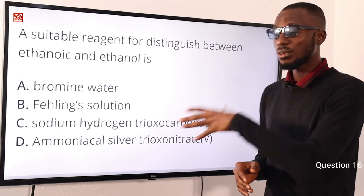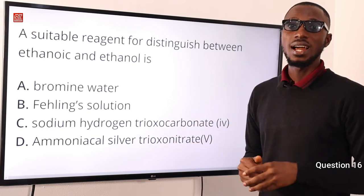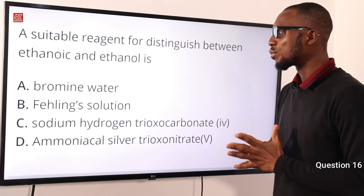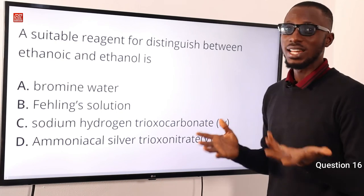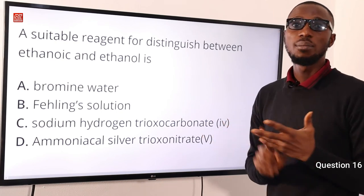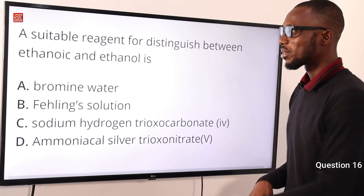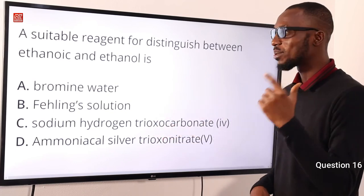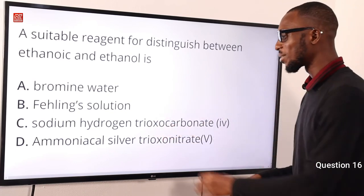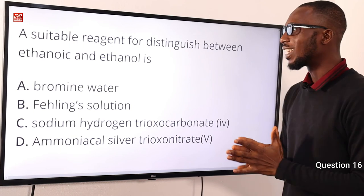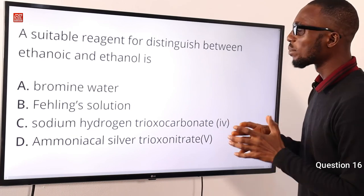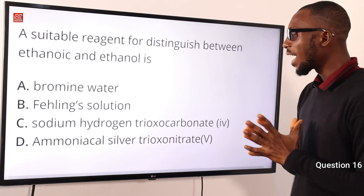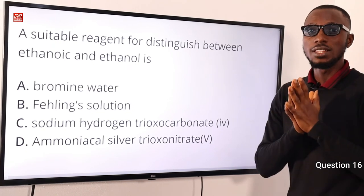When you react sodium hydrogen carbonate with an acid, you get water, carbon dioxide, and salt. This gives a good hint — since ethanoic acid is an acid and ethanol is an alcohol, only the acid reacts. The correct option is option C — sodium hydrogen carbonate is the suitable reagent for distinguishing between ethanoic acid and ethanol.